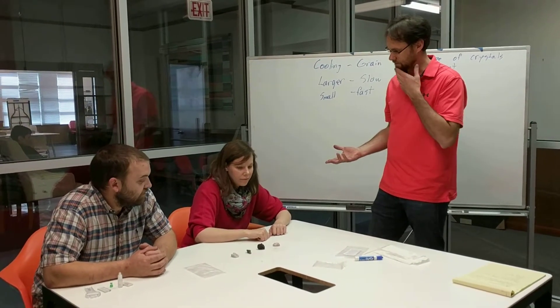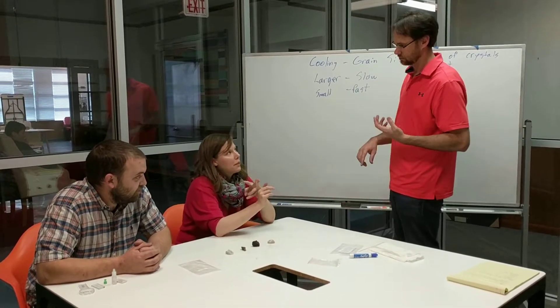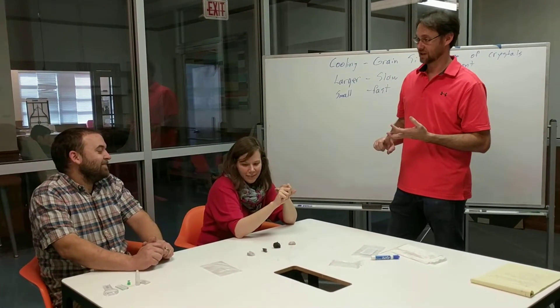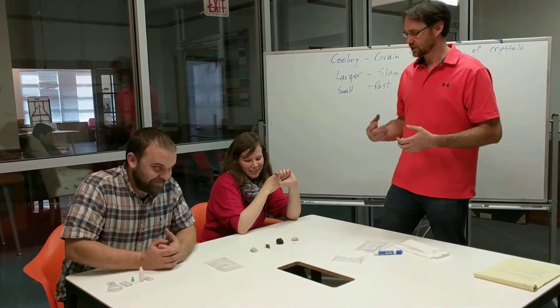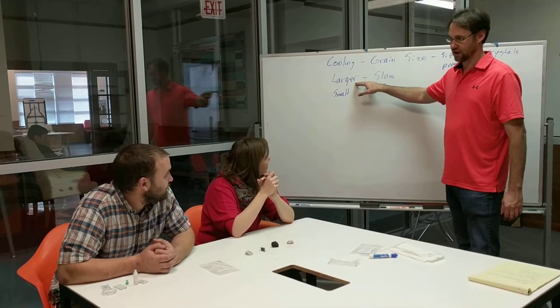Which were the ones you were able to see? Quartz, biotite, potassium feldspar. There you go, very good. So since you were able to see those, that means that we have a large grain size.